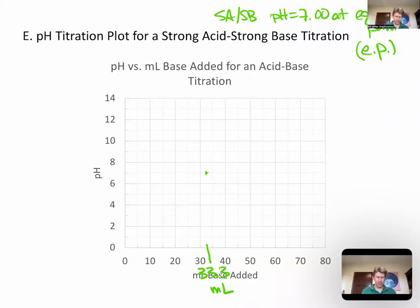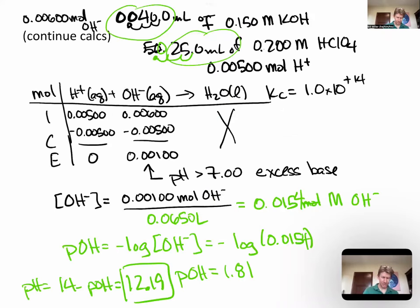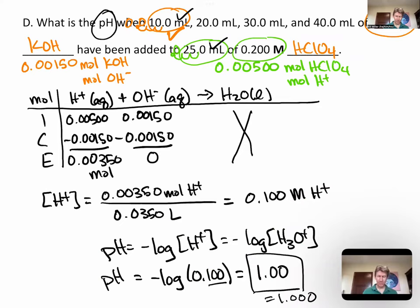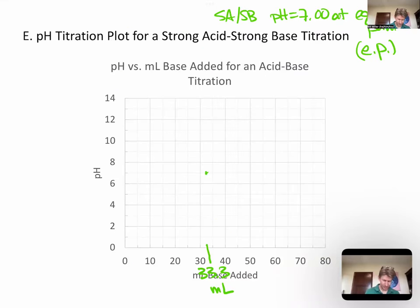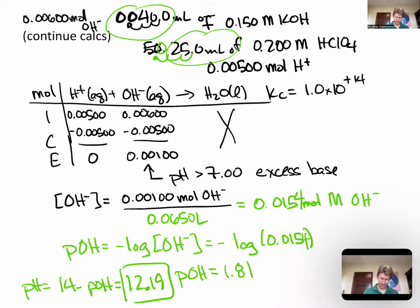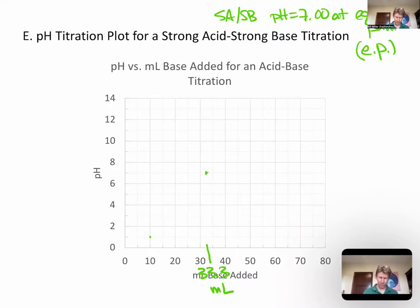Okay, so pH 7 is at 3.33, and we know that after 10 milliliters, the pH is 1, and after 40 milliliters, the pH is 12.19. Maybe somewhere right around there.